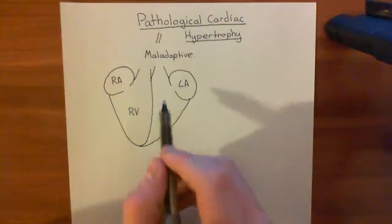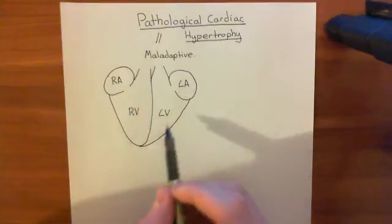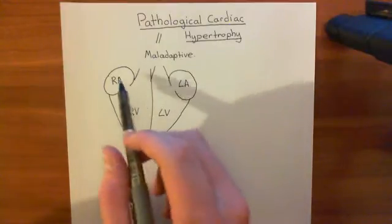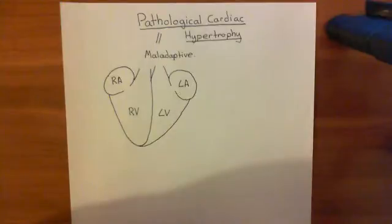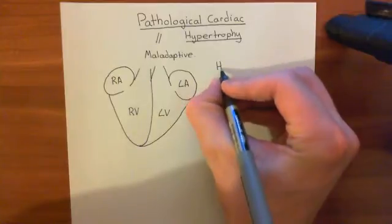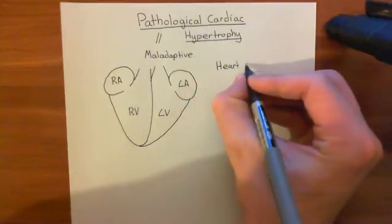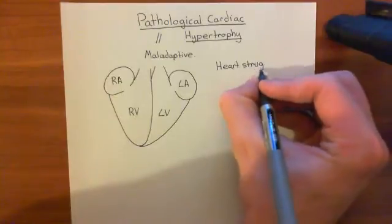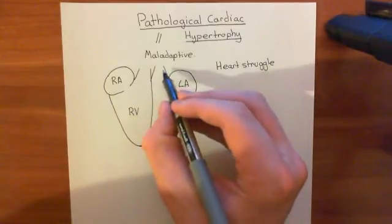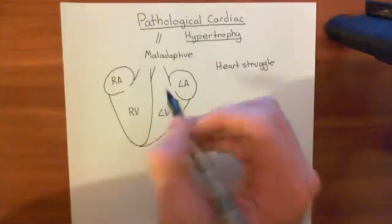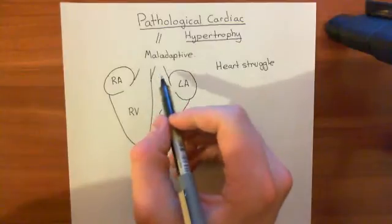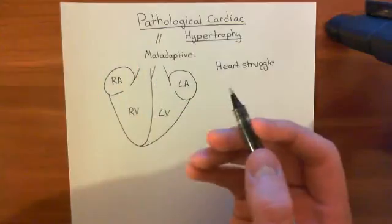The heart struggles. We'll talk about the left ventricle, though the same principles carry over to the right ventricle and the atria as well. Why might the left ventricle struggle to perform its role? Its role is to push the blood into the aorta. Why might it have a really difficult time doing that? If it's receiving a huge amount of resistance to the movement of blood into the aorta, that might be a reason.